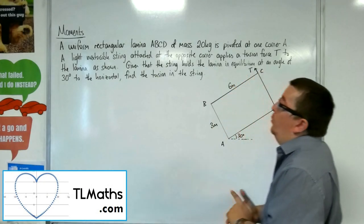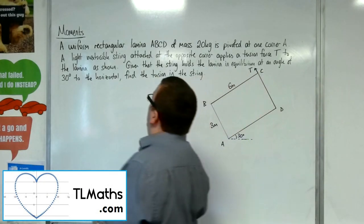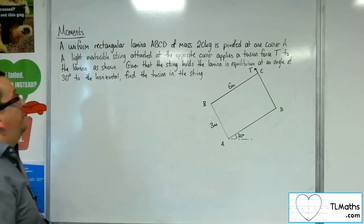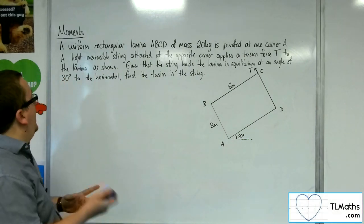Okay, so in this video, we've got a uniform rectangular laminar ABCD of mass 20 kilos, pivoted at one corner A.